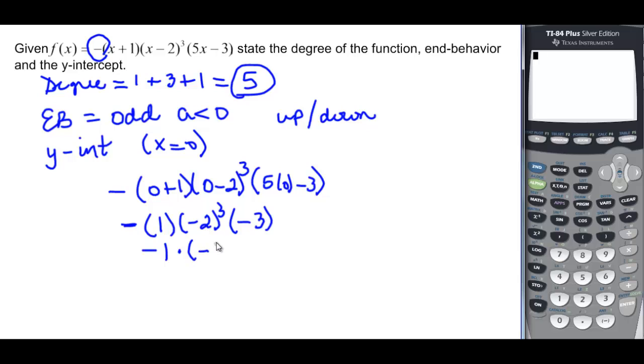And this is really just negative 3 because 5 times 0 is 0. So negative 1 times negative 2 cubed is going to be negative 8, and then times negative 3. Well, negative times a negative here is going to give me positive 8 times negative 3, which is going to be negative 24. 0, negative 24.